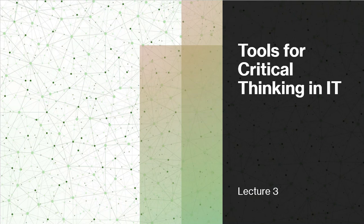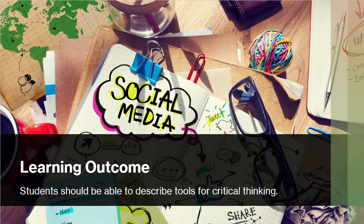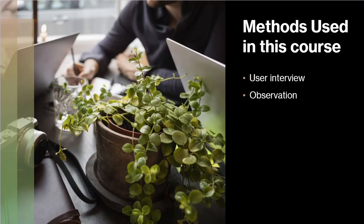So basically when we identify the problems, it is actually related to the user. All of us are users. So today the learning outcome is you should be able to describe tools for critical thinking. We are going to see what are the tools that can be used for critical thinking.